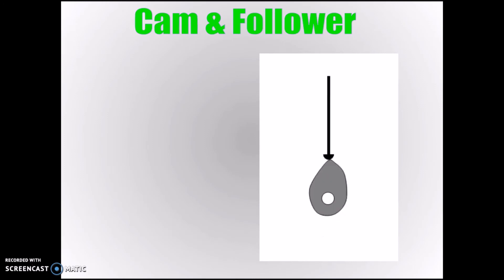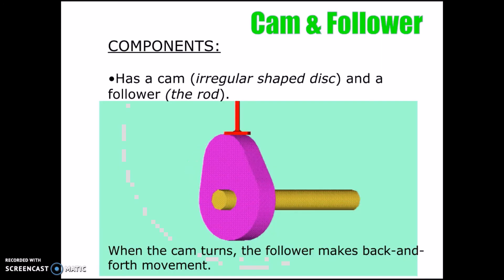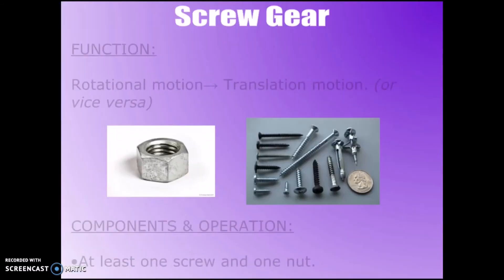Now in a cam and follower system, there are no intermediates. You simply have a cam and a follower. The cam is the irregular-shaped disc—it's not a perfect circle. And the follower is the rod. Now the cam turns, that's rotational motion, and the follower is translational motion, so it makes a back and forth movement.